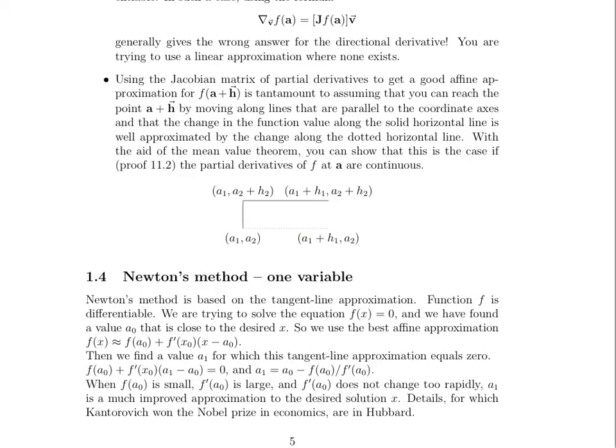Some interesting applications of derivatives are Newton's method. So Newton's method is based on a tangent line approximation, and it's a way to try to find the zeros of an equation that doesn't happen to be linear. And so we use our best guess that's pretty close to 0. Say we find a_0, whose function value is close to 0 and close to the desired x. And so we use our best affine approximation here, and what we do here is we find a value for a_1, which is where this tangent line itself has a 0.